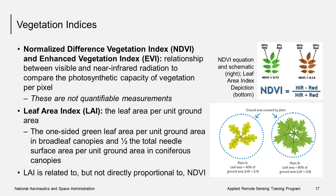Various indices relate to productivity measures that can be measured by remote sensing. Normalized difference vegetation index (NDVI) and enhanced vegetation index (EVI) represent the relationship between visible and near-infrared radiation, quantifying the photosynthetic capacity of vegetation per pixel. Note that these are not really quantifiable measurements — you can't measure NDVI vegetation on the ground. What you can measure is leaf area index (LAI), which is the leaf area per unit ground area. For broadleaf canopies, it's the one-sided green leaf area per unit ground area; for coniferous canopies, it's half the total needle surface area per unit ground area. LAI is related to, but not directly proportional to, NDVI, and different vegetation types exhibit different relationships.